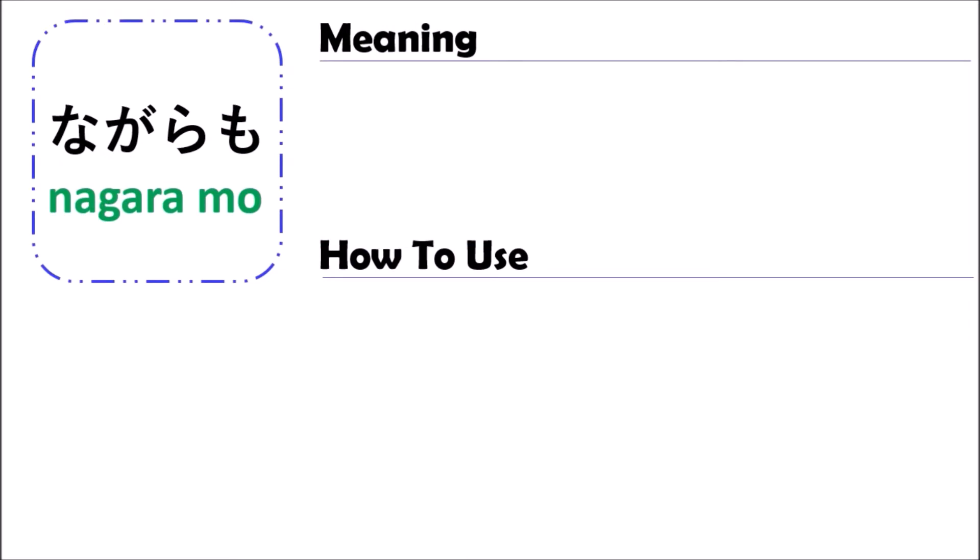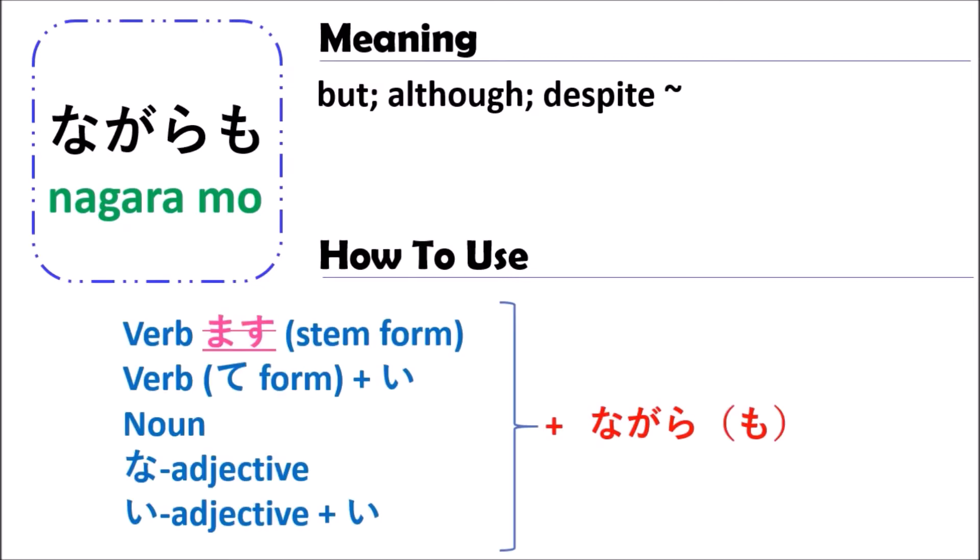The grammar of nagaramo means 'but,' 'even though,' or 'despite.' In Japanese, when you use the grammar of nagaramo, you can use it with a verb, noun, or adjective.